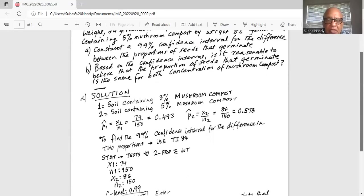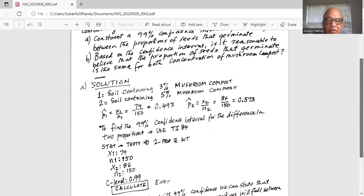To find a 99 percent confidence interval for the difference in two proportions, use the TI-84 calculator.